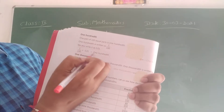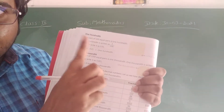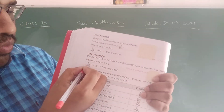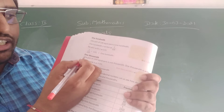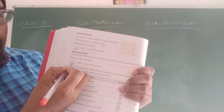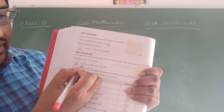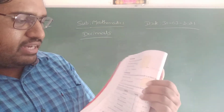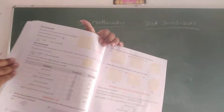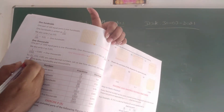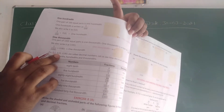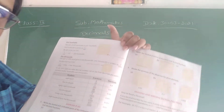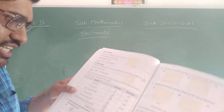You have to keep these things in your mind. Similarly, one tenth means one by ten, one hundredth means one by hundred, one thousandth means one by thousand. One thousandth means one by thousand, and one by thousand can be written as 0.001. So: 0.1 means one tenth, 0.01 means one hundredth, 0.001 means one thousandth. You have to keep all these things in your mind, children.